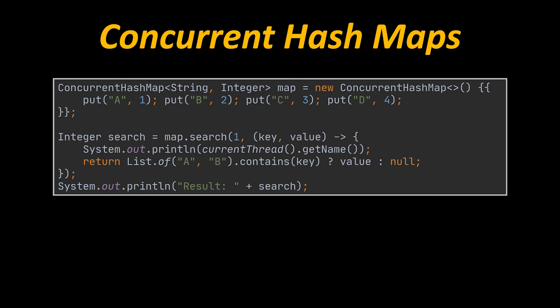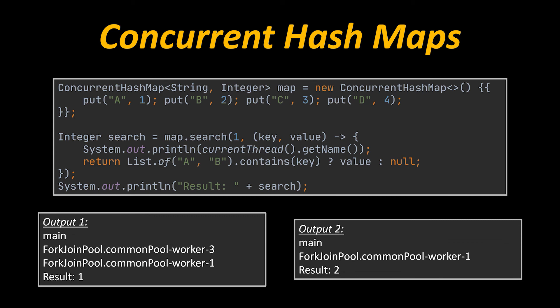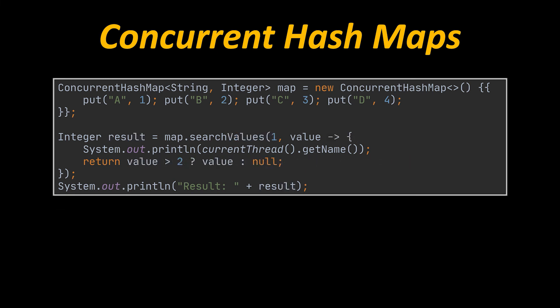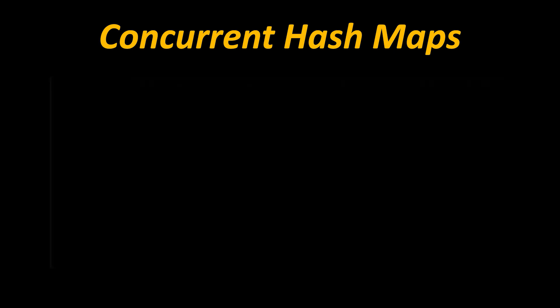The search method accepts a BiFunction that returns a non-null search result for a matching key-value pair, or null if the current iteration doesn't match. As soon as a non-null result is returned, further processing is stopped. Keep in mind that ConcurrentHashMap is unordered, so the search function should not depend on the actual processing order. There is also an overloaded method that searches solely among values, and another that searches among keys.